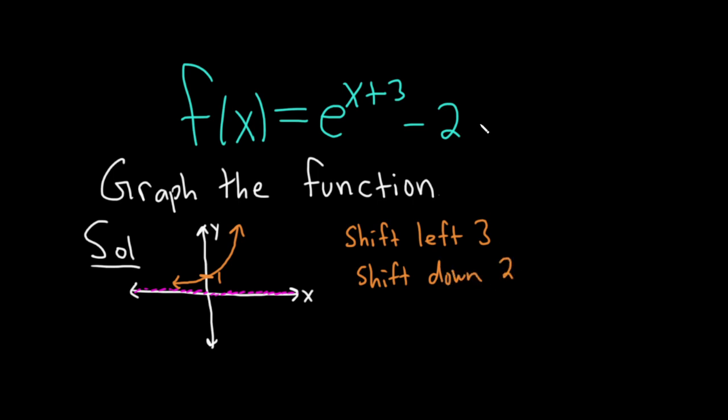So whenever you add or subtract from the x, it's backwards. Just a trick to memorize it. Add 3, it's really left 3. Subtract 3, it's really right 3. Whenever you add or subtract to the y-value, you're just going to go up or down. So down 2 is down 2.